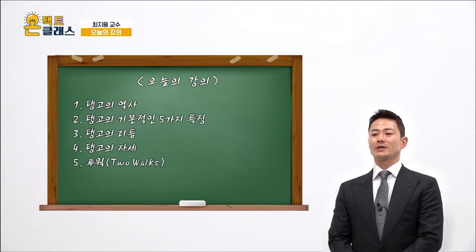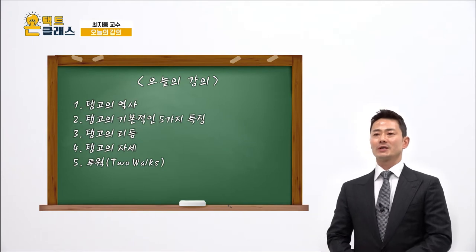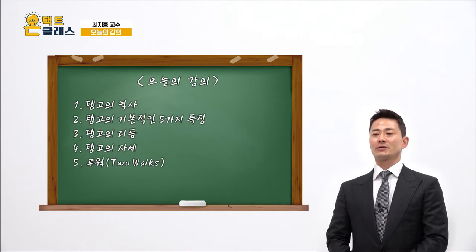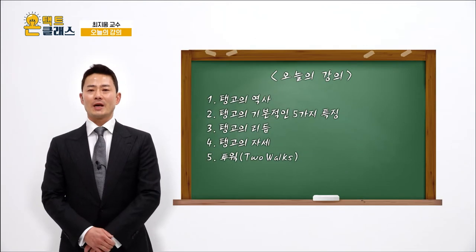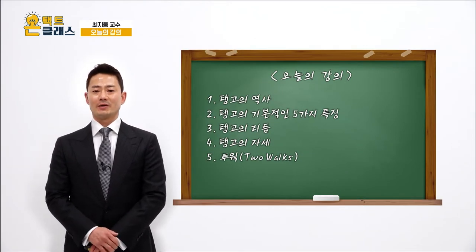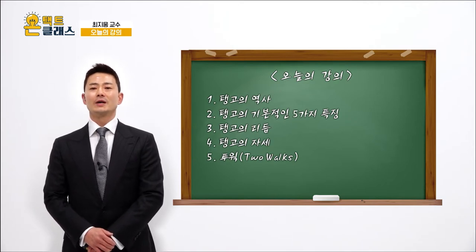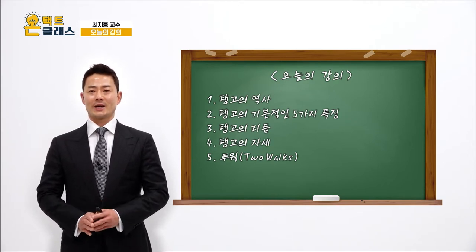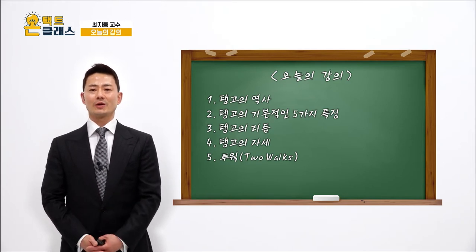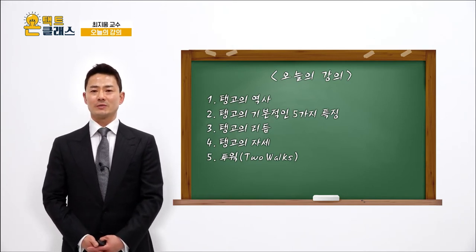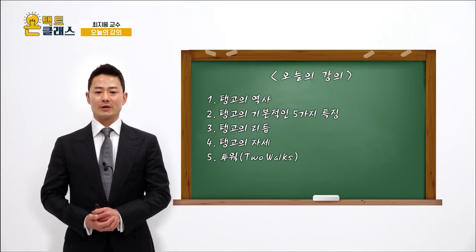첫 번째 탱고의 역사, 두 번째 탱고의 기본적인 특징들 다섯 가지, 세 번째 탱고의 리듬과 박자, 네 번째 탱고의 자세·홀드·푸드, 그리고 탱고에서 가장 기본적인 움직임인 탱고의 워크를 말씀드릴 거예요. 본격적으로 탱고의 첫 번째 루틴인 투어까지 즐겁게 배워 보도록 할게요.